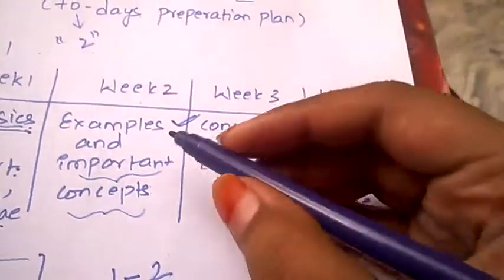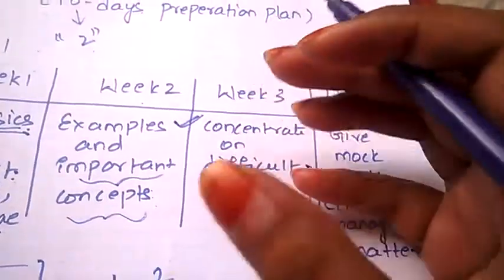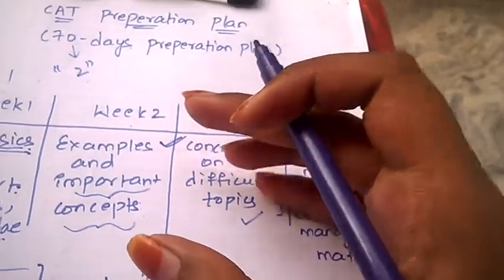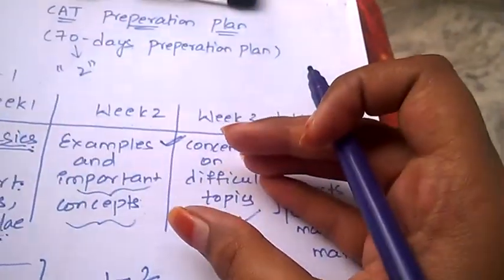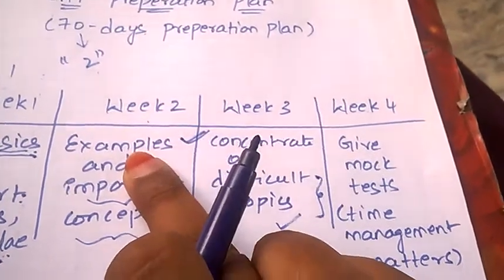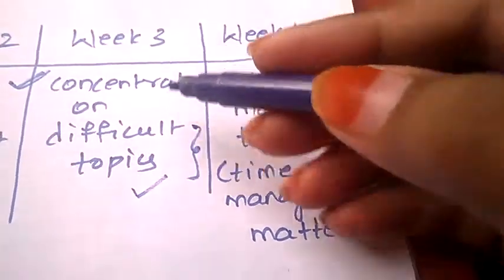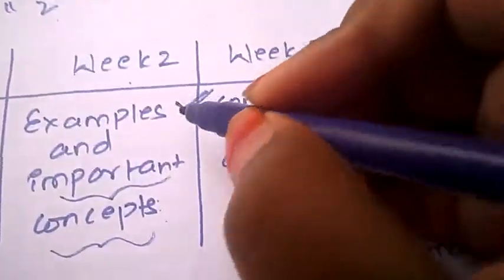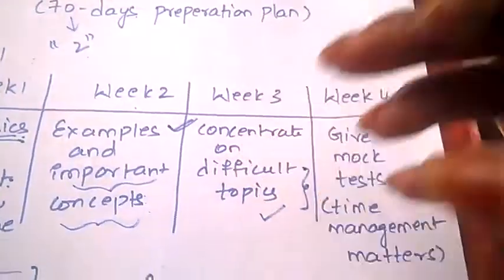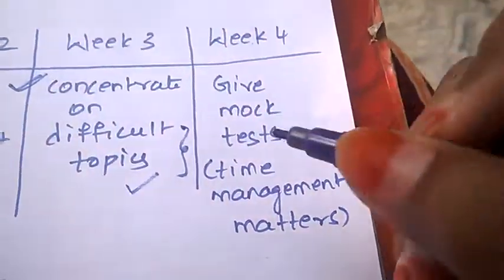You need to practice well and also concentrate on most important concepts. There will be a few concepts out of which, if you concentrate on them, you can secure three-fourths of marks only with those few topics. So concentrate on those topics and practice examples regularly in Week 2. Coming to Week 3, you need to concentrate on the difficult topics. After you keep solving examples, you may feel few topics are really hard and time-consuming. Those topics you need to solve and concentrate more in Week 3.